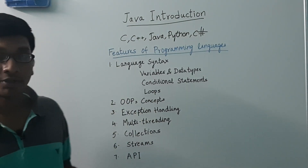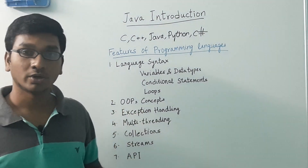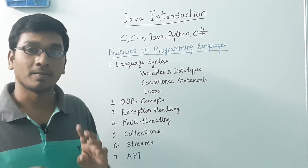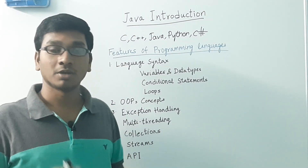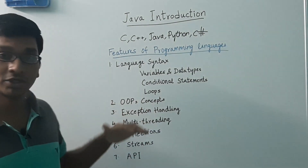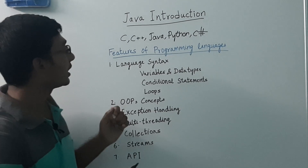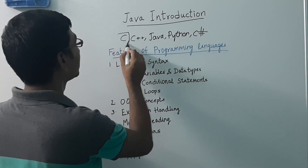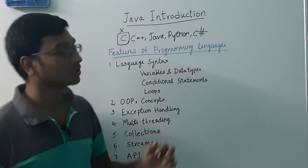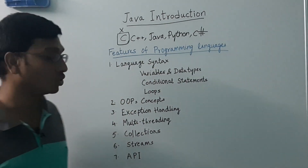Next is the OOP concept — object oriented programming. We have classes, objects, abstraction, inheritance, polymorphism, and encapsulation. All these concepts come under object oriented programming, usually called OOP. All languages except C support OOP concepts, so only C doesn't support OOP.